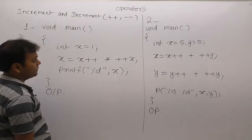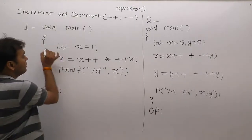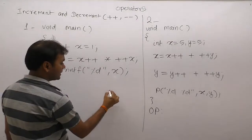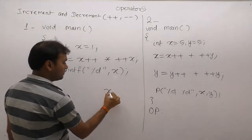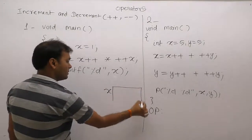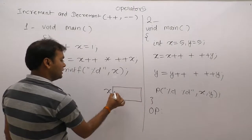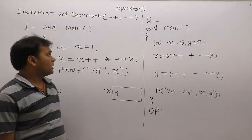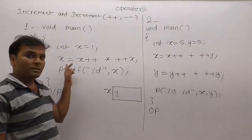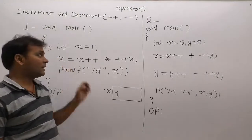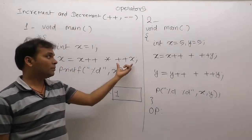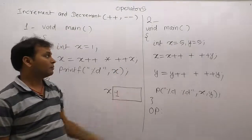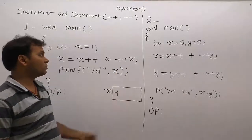In program one, first of all we are allocating memory space for variable x with an initial value of 1. Now concentrate on this expression. We need to identify which operations are pre-increment, post-increment, and assignment — all three are applied with respect to x.